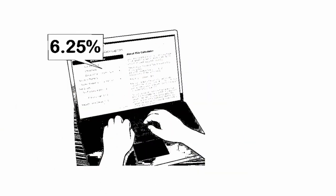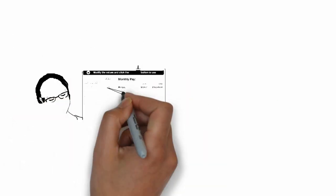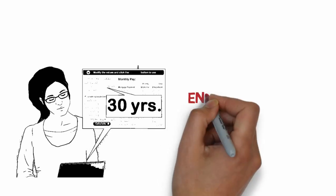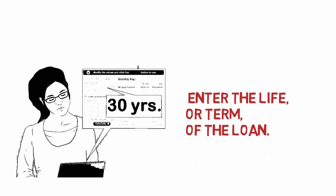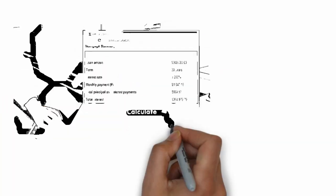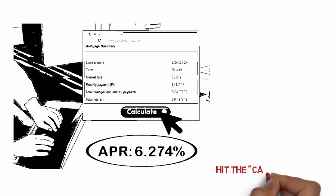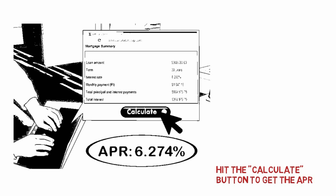Enter the given interest rate, which represents the interest rate per year without the additional fees. For this example, calculate based on a 6.25% interest rate. Enter the life, or term, of the loan — most mortgages are based on the 30-year fixed. You may have to convert this to months by multiplying the number of years by 12. Hit the calculate button to get the APR, which is different from the interest rate, as APR represents the real cost of the loan based on the total amount borrowed, not just the current interest rate.